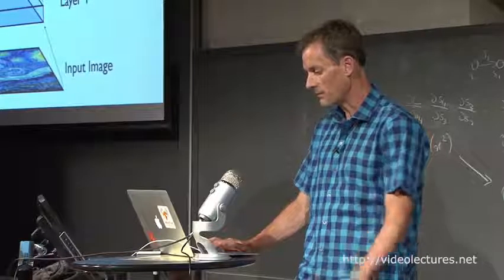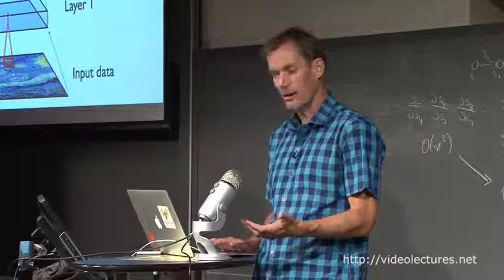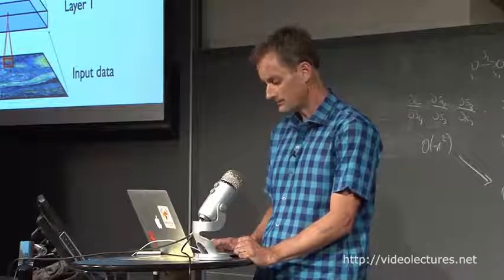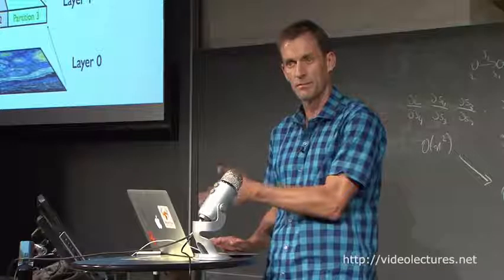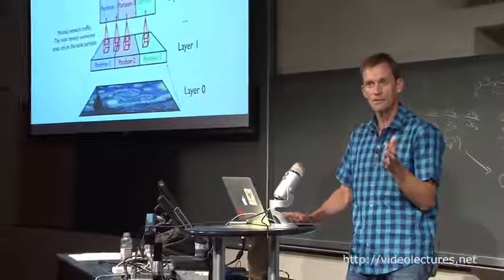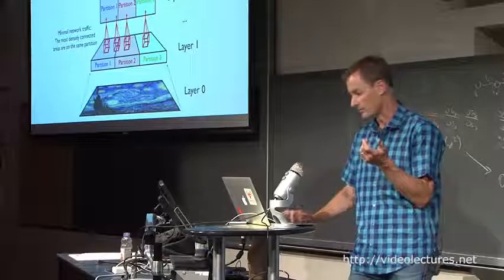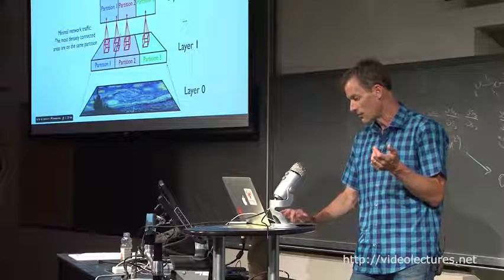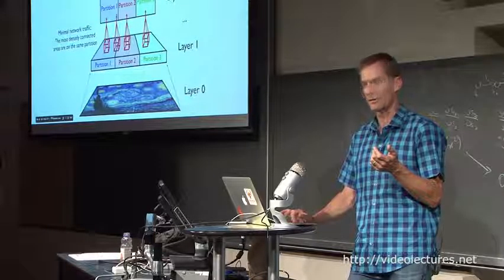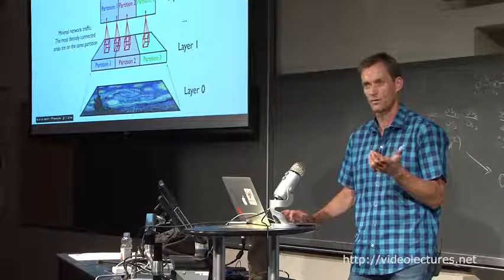But model parallelism basically is this idea that you have a model that looks like that. And often in these models, in a convolutional model, you have these local receptive fields. That means that if you partition the model this way, you really don't need to communicate that much data for the activations of the model across network boundaries or across device boundaries. Basically, only this stuff that spans the partition one, partition two boundary do you need to do any communication for. Everything else is local, remains local to its particular partition.